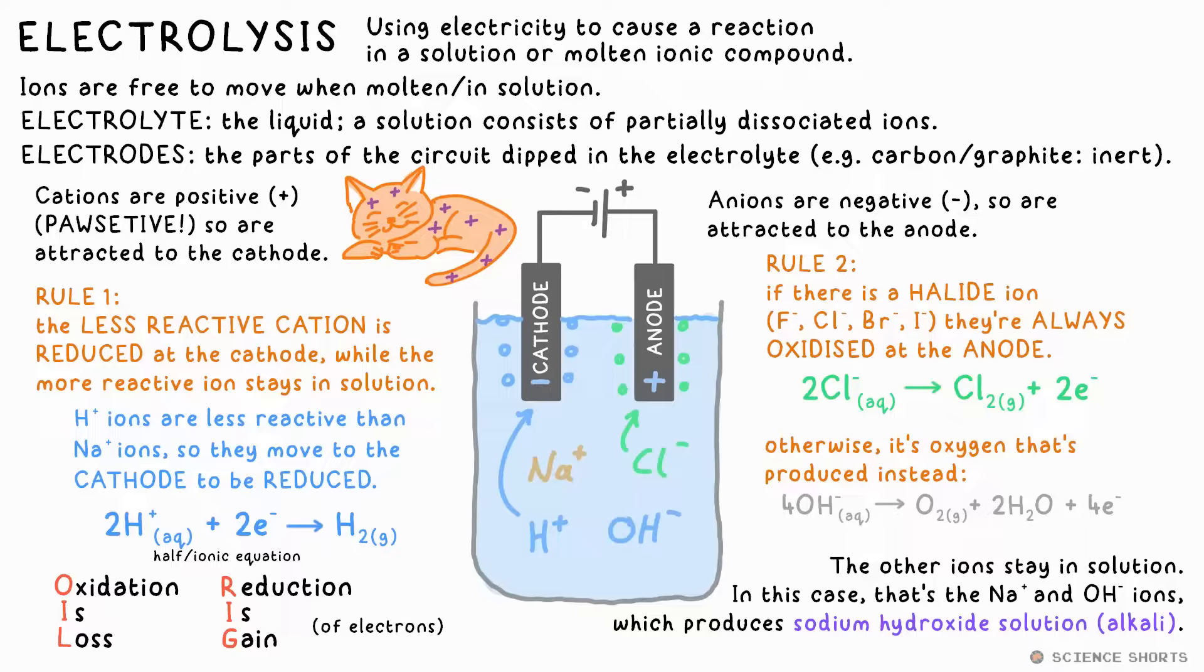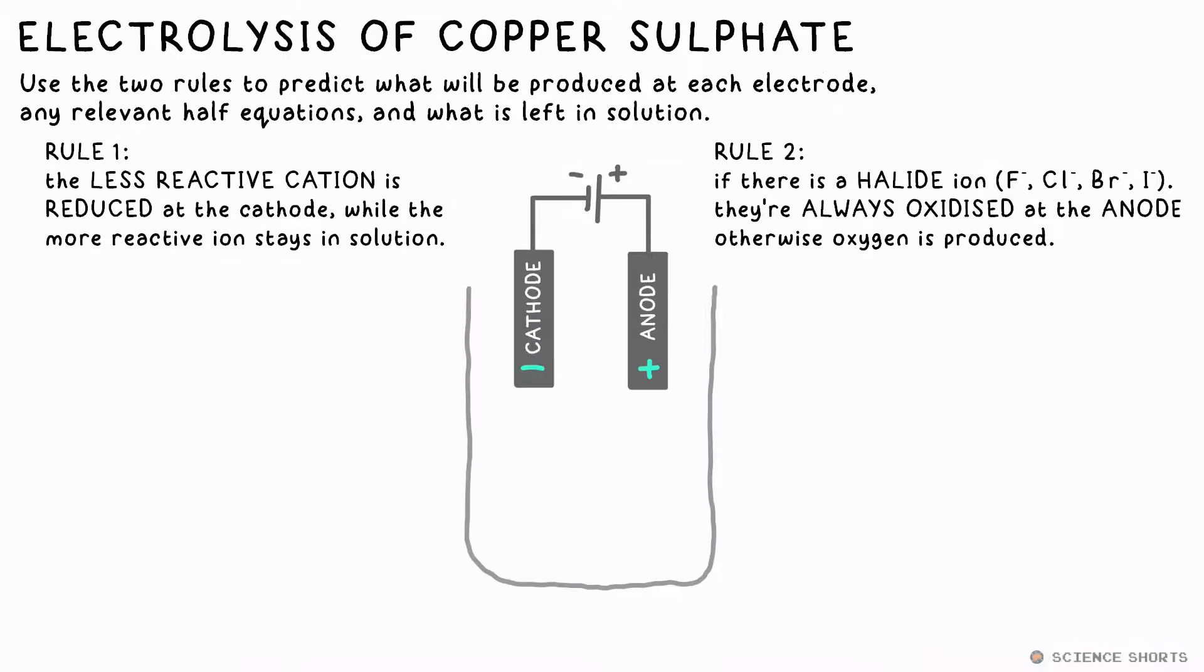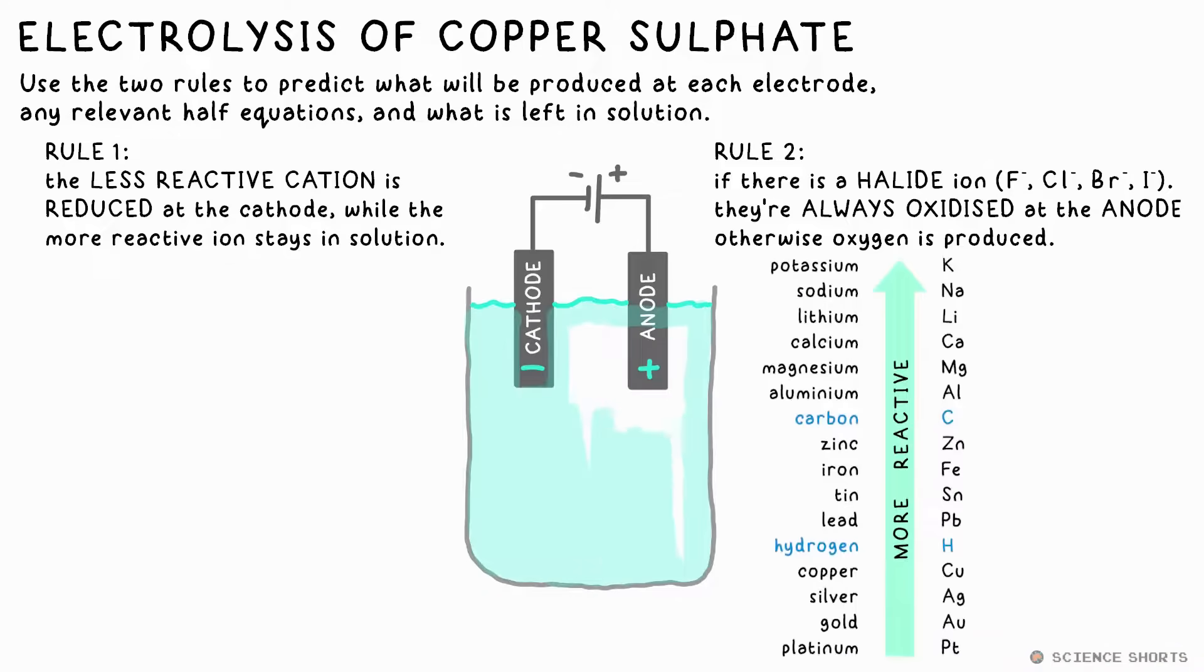In the case of our sodium chloride solution, that leaves the Na+ and OH- ions in solution. So we've actually made sodium hydroxide solution. And that's all there is to the electrolysis of solutions. Try and use these rules to predict what will happen in another classic example, the electrolysis of copper sulfate solution. Pause the video and see if you can figure out what will be produced at each electrode, the half equations, and what solution is produced as a result.